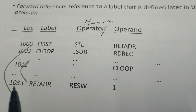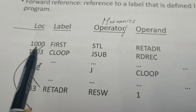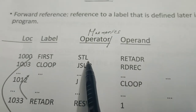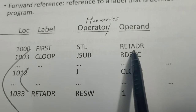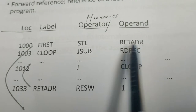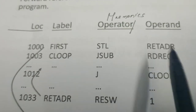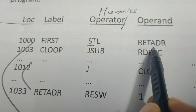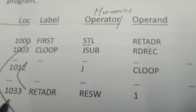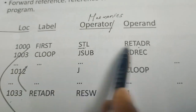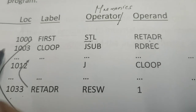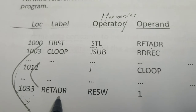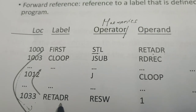Consider the first instruction: STL RETADR — store linkage register return address, meaning the content of the linkage register should be stored at memory address named RETADR. When the assembler scans this instruction for the first time, it knows the opcode of STL, but it does not know the whereabouts of RETADR. RETADR is available at address 1033. Since this is a forward reference, the assembler does not know its address until it reads further — that is why a two-pass assembler is needed.